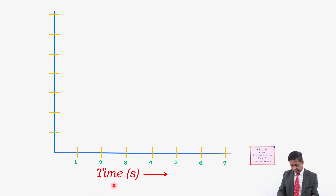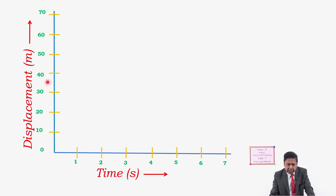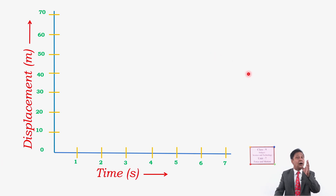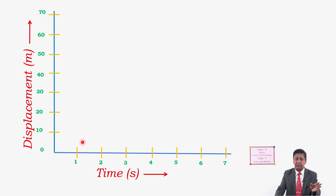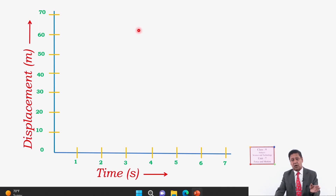On the y-axis, displacement is placed and measured in meters. This is just the structure of the displacement-time graph — the graph itself has not been drawn yet. The displacement-time graph contains time on the x-axis and displacement on the y-axis.